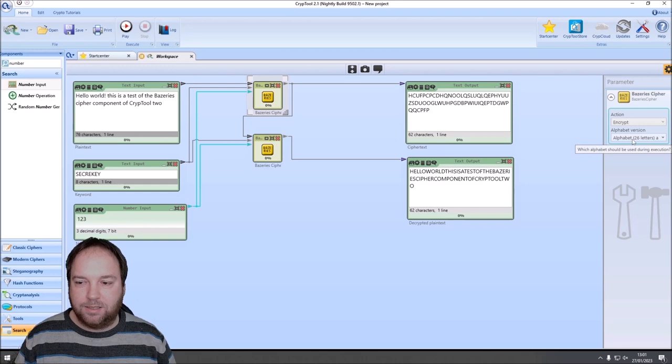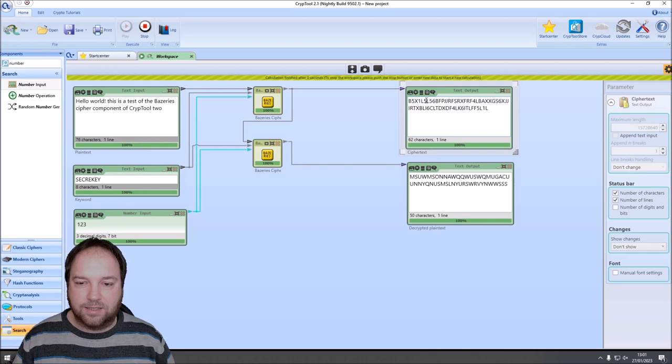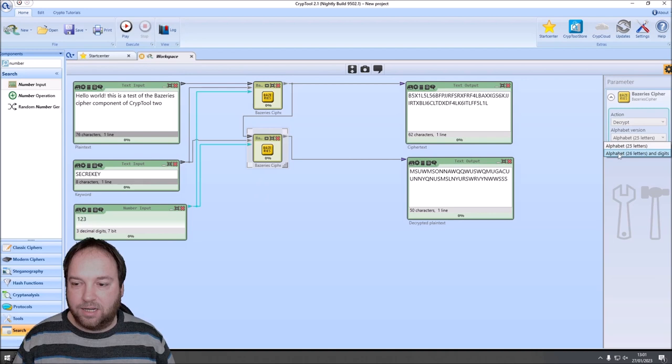When we only change the first component to the 36 symbol alphabet, then of course we will have a problem. Because the second component is not able to decrypt our cipher text. You can see here we have now a cipher text that also contains digits. And of course the decryption doesn't work. To allow the second component to decrypt correctly, we have to also change this to the 36 characters or symbol alphabet. Now when we press play you can see hello world and so on. It works.